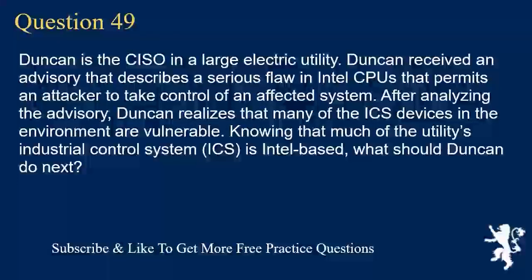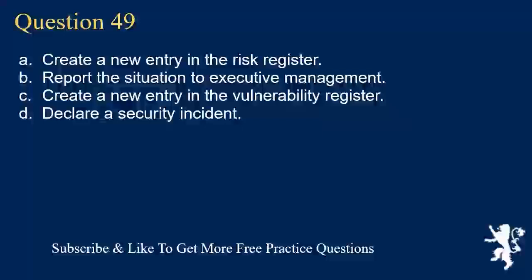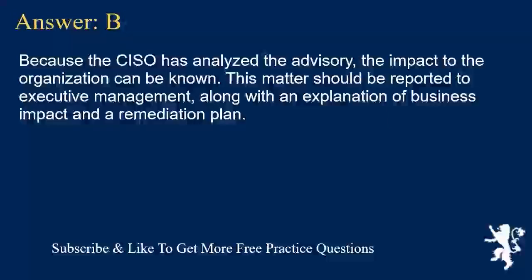Question 49. Duncan is the CISO in a large electric utility. Duncan received an advisory that describes a serious flaw in Intel CPUs that permits an attacker to take control of an affected system. After analyzing the advisory, Duncan realizes that many of the ICS devices in the environment are vulnerable. What should Duncan do next? A. Create a new entry in the risk register. B. Report the situation to executive management. C. Create a new entry in the vulnerability register. D. Declare a security incident. Answer B. Because the CISO has analyzed the advisory, the impact to the organization can be known. This matter should be reported to executive management, along with an explanation of business impact and a remediation plan.